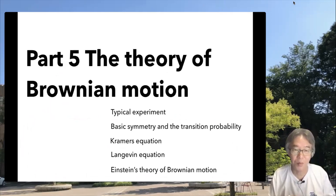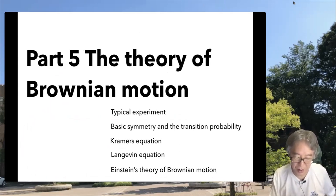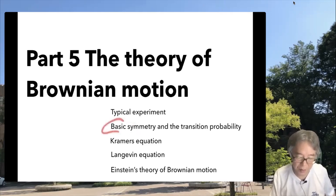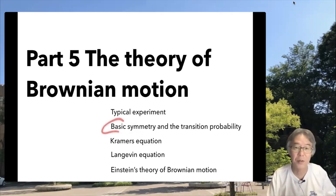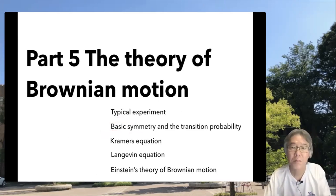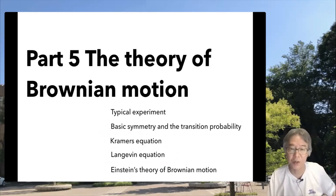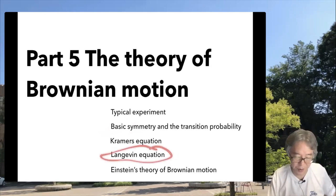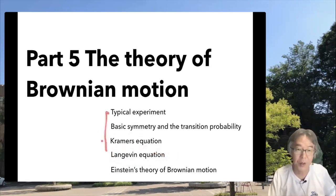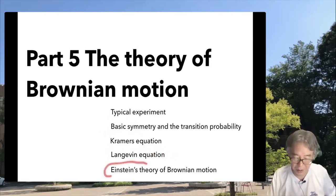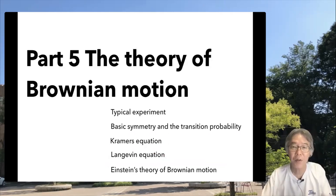Part 5 covers the theory of Brownian motion in a way opposite to standard textbooks. I first discuss a symmetry that is essentially the fluctuation theorem, then derive the Fokker-Planck equation — a partial differential equation for the probability density of a Brownian particle — and from this derive the Langevin equation. Many textbooks start from the Langevin equation, but here I derive it from the fluctuation theorem. Finally, I discuss Einstein's theory of Brownian motion. That is all for the introduction — hopefully see you in Part 1.